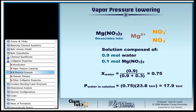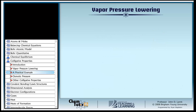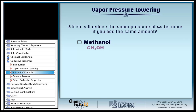Bottom line: if you wanted to reduce the vapor pressure of water, which would be more effective to add at the same amount — methanol or magnesium nitrate? Magnesium nitrate is more effective because it produces more particles.